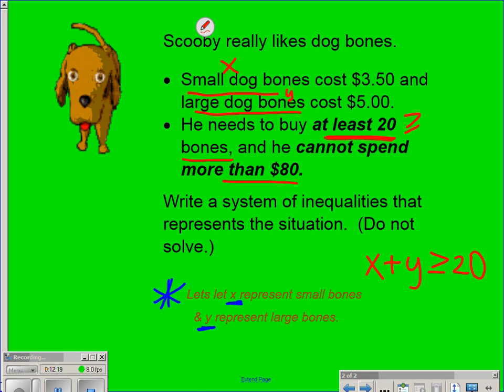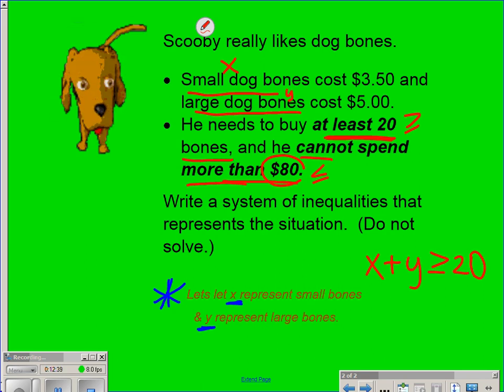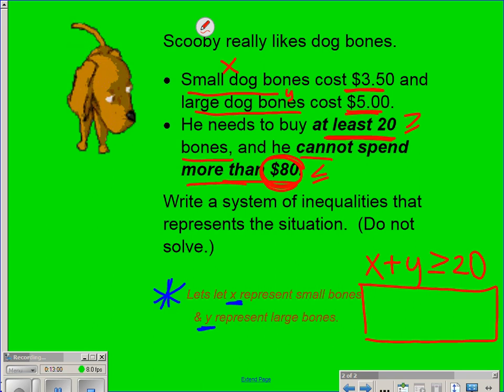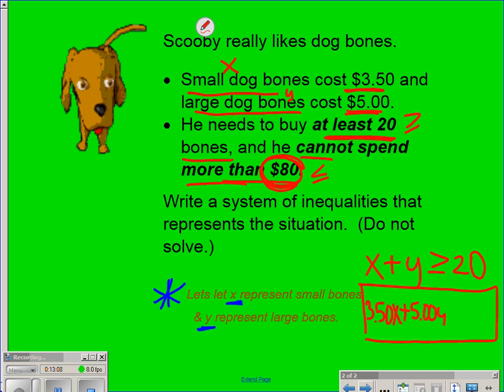Now, the second inequality deals with money. All right? So if I'm telling you that he cannot spend more than $80, cannot spend more than $80, well, I think that means that he's got to spend less than 80 or equal to 80, but he can't go over 80. All right? But that second inequality is not going to be X plus Y is less than or equal to 80. Because 80 is a dollar amount, you've got to have these dollar amounts attached to your X's and Y's. So think about what that second inequality should be. I believe it's going to be $3.50 per small bone plus $5 per large bone, and that total amount that we spend on all those bones has to be less or equal to $80, good.